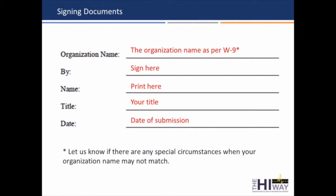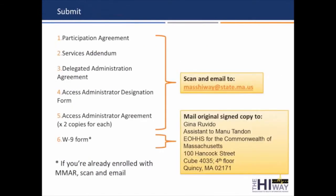The byline is actually where you sign, and of course you need to print a name, title, and the date. Here's everything that you're submitting — it's a total of seven forms. On the W-9, technically we do need a wet signature on the W-9 mailed to us, only if your organization is not already enrolled in the Massachusetts Management Accounting and Reporting System. If you are, a PDF scanned copy of your W-9 is totally fine.